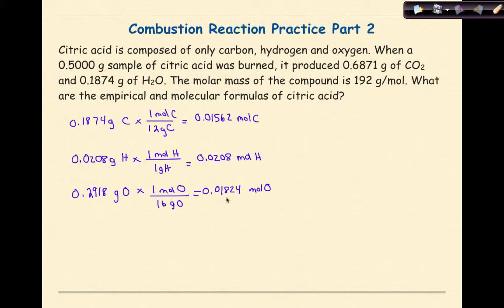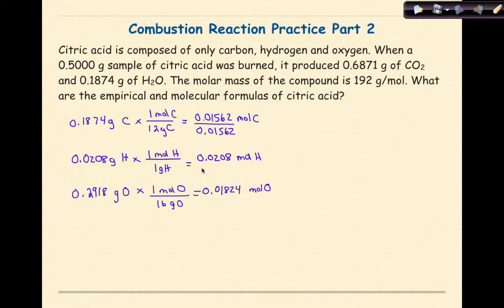I need to look over these three numbers and identify the smallest one — take your time, because if you read too fast you'll make a mistake. The smallest number is 0.01562, so I'm going to divide all my numbers, including this one, by 0.01562.